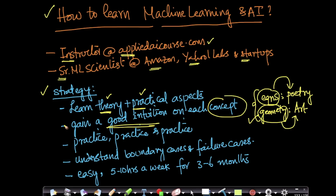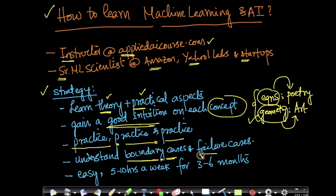Whenever you learn a technique in any area — whether it's probability, statistics, or machine learning — try to practice and apply the technique in lots of places to understand where it works and where it doesn't. For every technique you understand, try to identify the boundary cases, what happens in those cases, and what the failure cases are — where does a given technique fail.